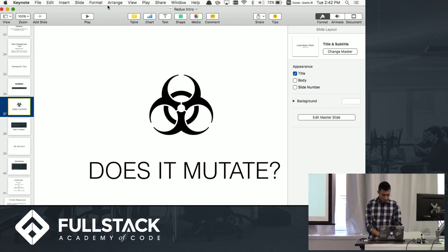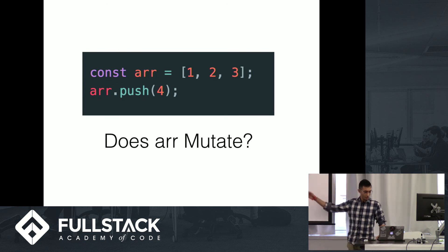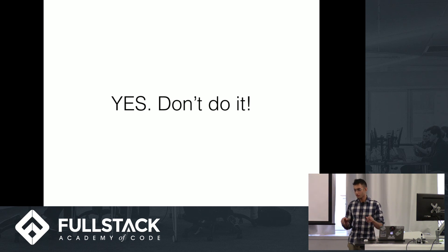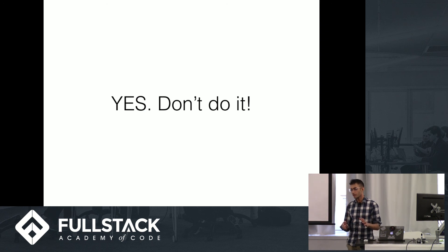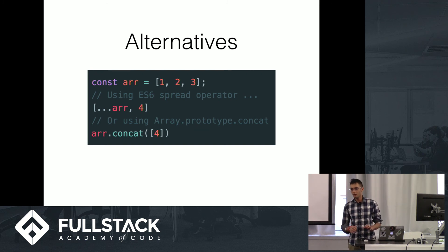Let's play a quick game of 'does it mutate?' This is an array of 1, 2, 3. If I do r.push(4), does it mutate? Yeah, it does — so don't do that if you're managing state. There's actually a great library called Immutable that helps you deal with things this way, where it wraps arrays and objects in other objects that, when you call methods on them, don't mutate but just return new objects. You can also use ES6 spread operators to return new arrays, or Array.concat, which returns new arrays. The idea is just don't modify the objects.